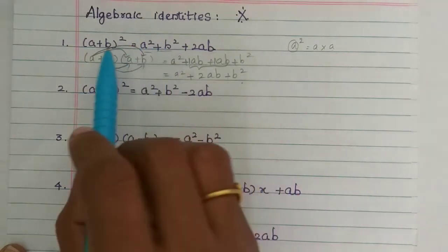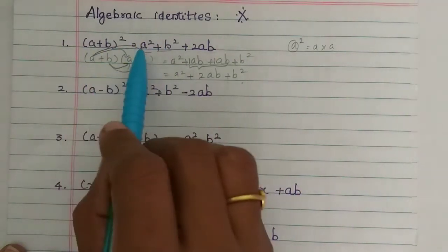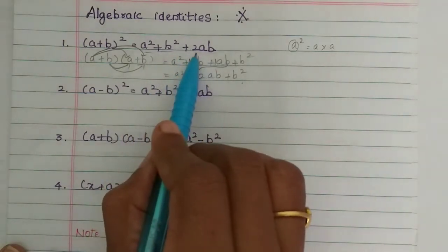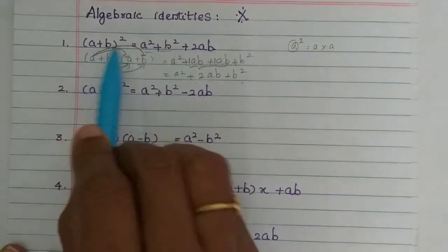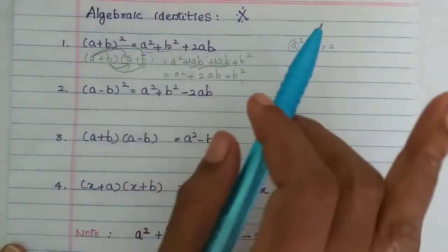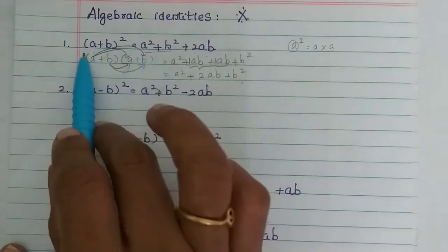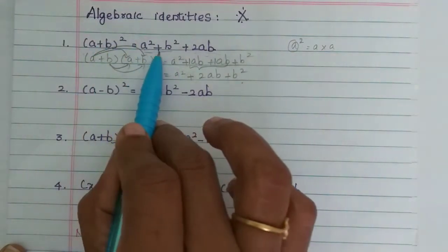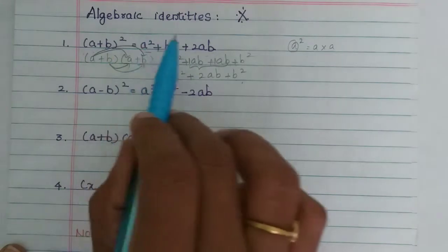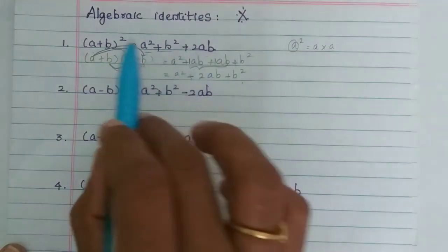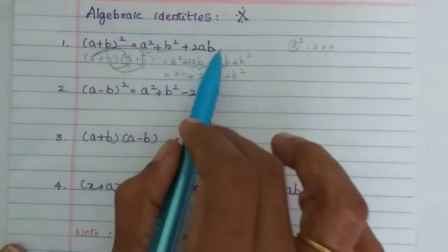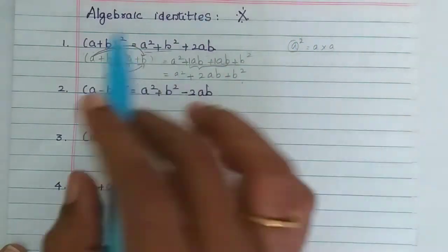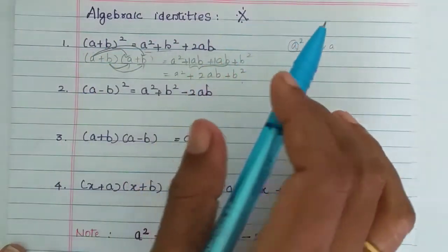Now it's easy to write down: first term squared plus second term squared plus 2 into first term into second term. So, a is the first term and b is the second term. This is the first formula — a plus b the whole square.